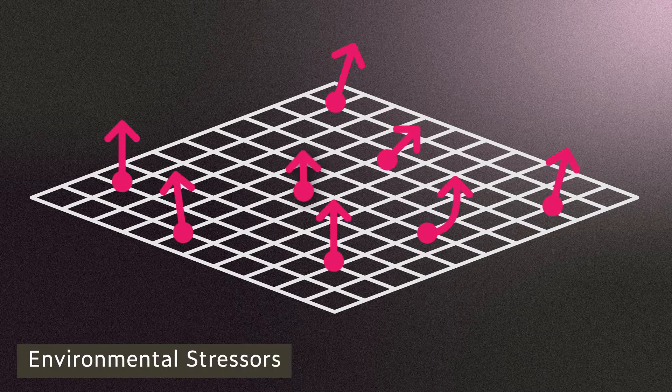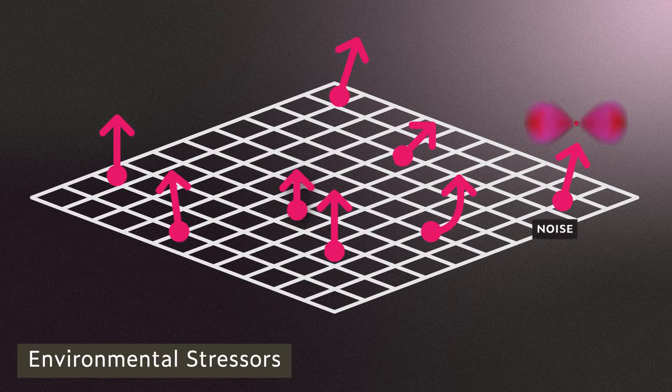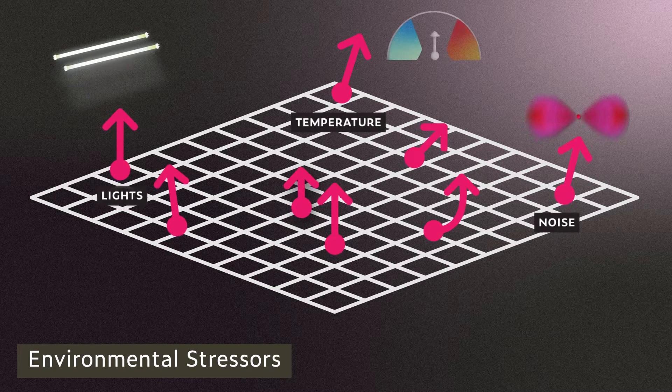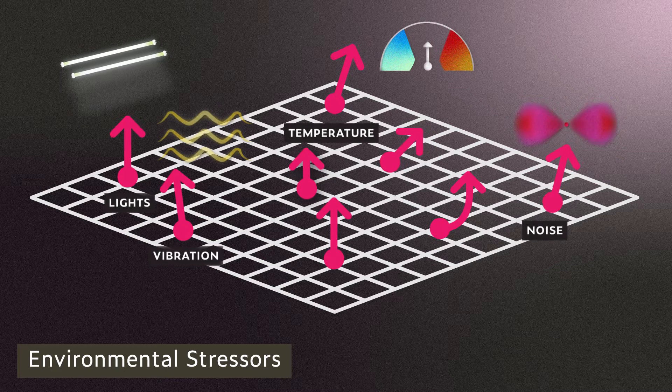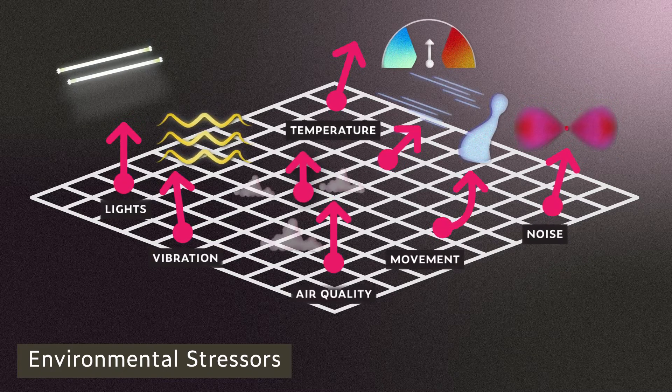Typical stressors in the physical environment are what you might imagine. Noise level, lighting, and temperature of the room. Depending on your environment, it may also include things like vibration, movement, or air quality.